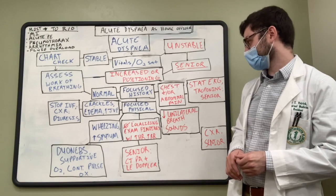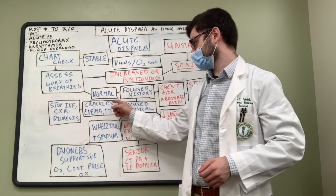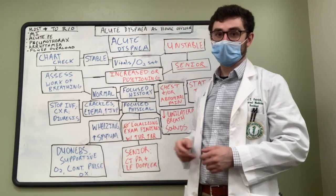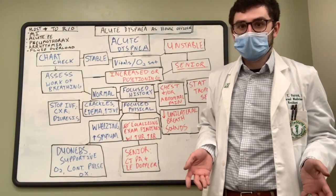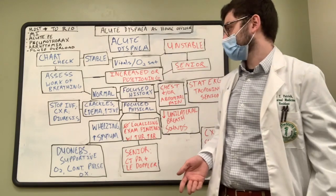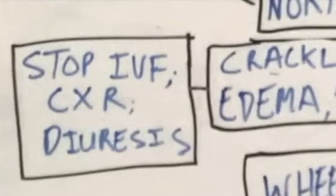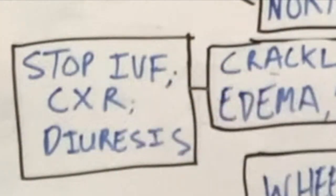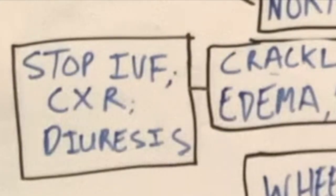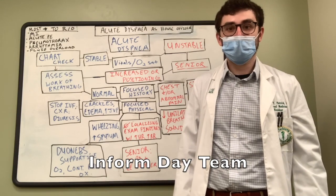If the patient has crackles on lung exam, edema especially in the lower extremities, and an elevated jugular venous pulsation, you might think this patient could be fluid overloaded. If the patient is getting IV fluids, stop them — you'll only make things worse. Consider getting a chest x-ray and giving diuresis to help remove the extra fluid, such as Bumex or Lasix depending on the patient. With appropriate treatment, the patient may be breathing much better by the time the day team arrives.